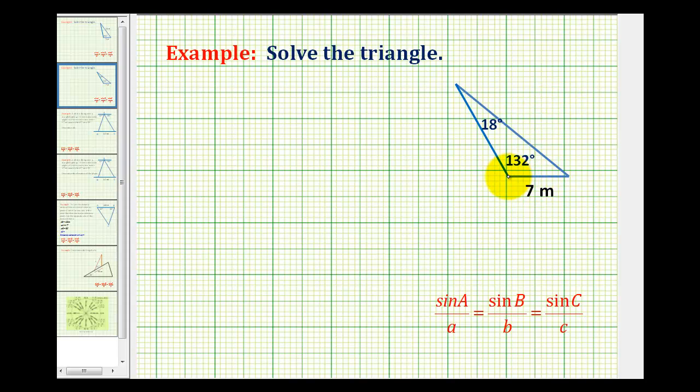We want to solve this triangle given the length of one of the sides and the measure of two of the angles. To keep things organized, let's go ahead and label the vertices and the sides. So let's call this vertex A, B, and C.